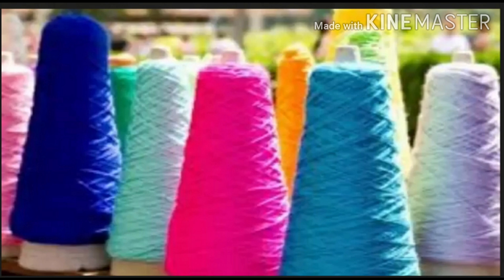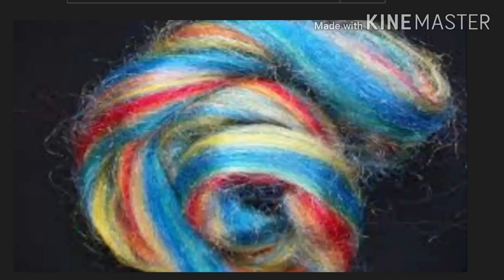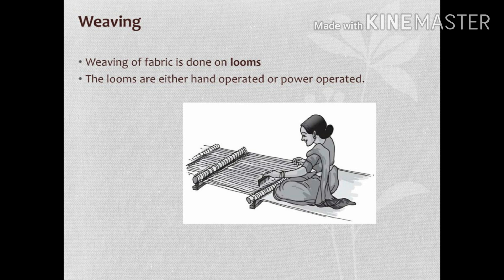Now we will understand what fabric is and how yarn is converted into sheets of cloth or dress material. This picture reminds us of the Father of the Nation, Mahatma Gandhi. He used to use this manual instrument to spin cotton yarn. This is the dyed yarn.